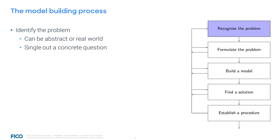In the model building process, we first have to identify the problem we want to solve. This can be an abstract problem, like a combinatorial optimization problem, or a real-world application. We have to single out one concrete question which we want to give an answer to — for example, what is the shortest path from A to B? This is where many practical applications already become hard. In practice, we often don't have a single objective function, but want to optimize several objectives simultaneously. In most cases, it's better to concentrate on only one of these challenges at a time.